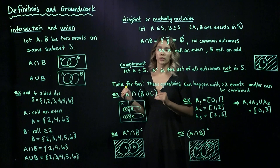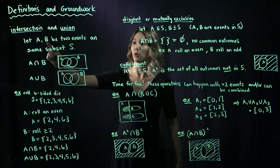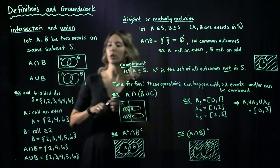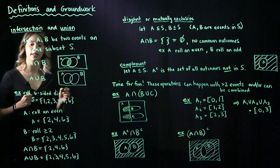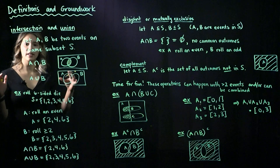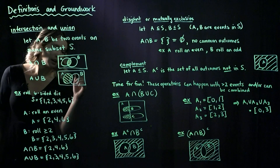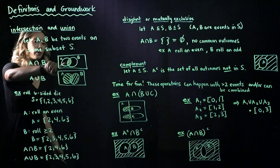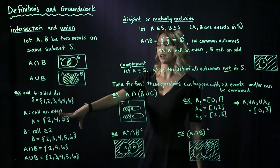We need to start with a couple of events that are defined on the same sample space S. We're going to have two events, calling them A and B. If we want to look at the intersection of A and B, we look at all the events that are in both A and B — what they have in common. The union is anything that's in A and/or B, so we include everything in A and everything in B. The shaded area represents the intersection, and the other shaded area represents the union.